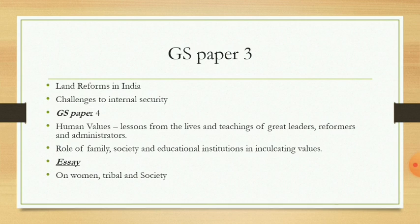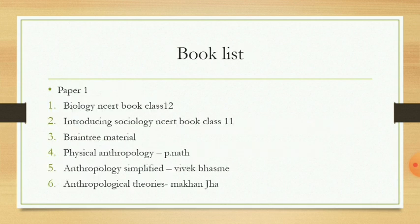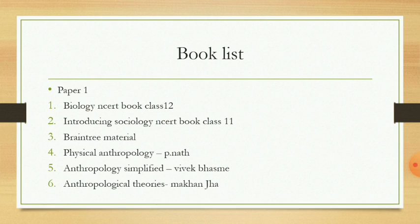See topper videos and read books that are commonly referred to by all. Here are book lists. For Paper 1: Biology NCERT Class 12th — just read it, it is very important and helpful for basic understanding. Introducing Sociology NCERT Class 11th. Brain Tree material is really good. Physical Anthropology by Peanut. Anthropology Simplified by Vivek Vasem is very good for diagrams. Anthropological Theories by Makhan Jai and the Ember Book.